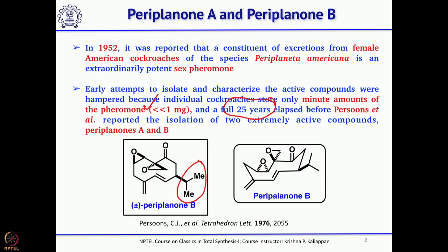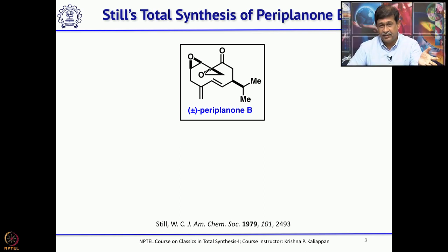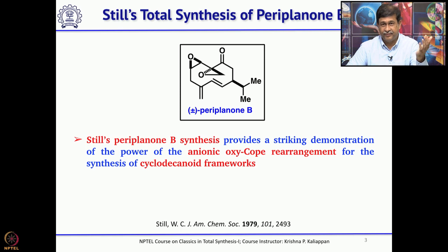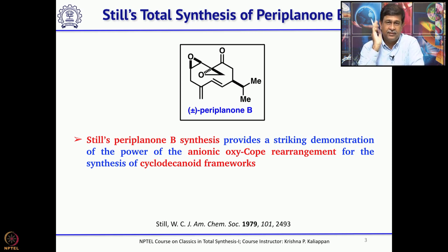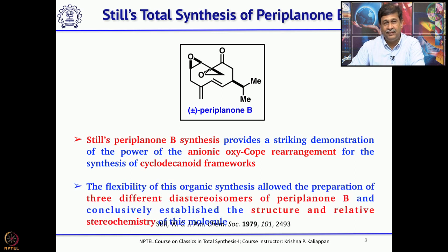The first synthesis of Periplanone B was reported by Still in 1979. Actually, before he completed the total synthesis of Periplanone B, he initially made two wrong isomers. The key reaction he used was anionic oxy-Cope rearrangement to form the cyclodecane unit — a 10-membered ring that was cleverly formed using anionic oxy-Cope rearrangement.